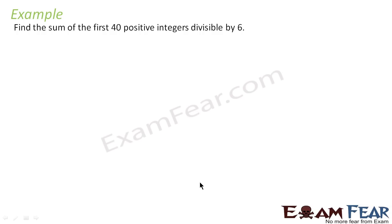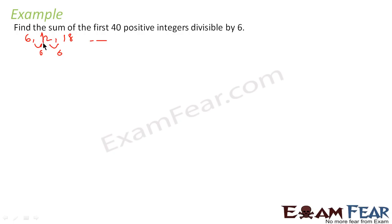For example, find the sum of first 40 positive integers divisible by 6. This is a similar question we have done. For a number to be divisible by 6, the number should be 6, 12, 18 and so on. This will be an AP where the common difference will be 6, because all numbers must be divisible by 6. The least such number is 6, then 12, then 18.